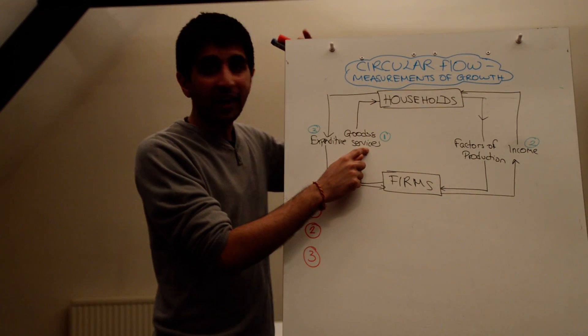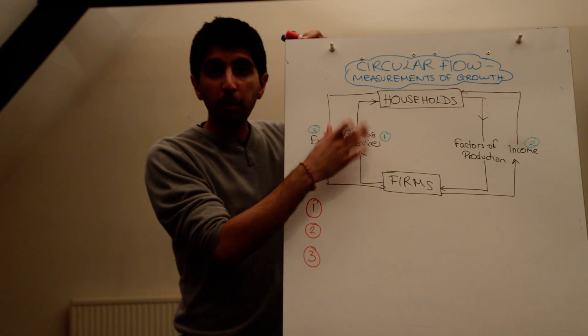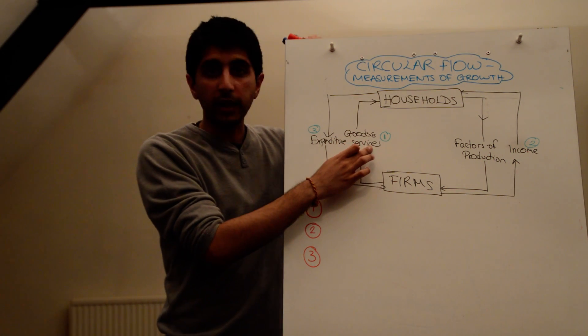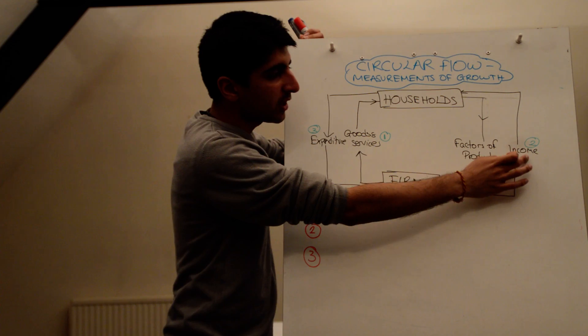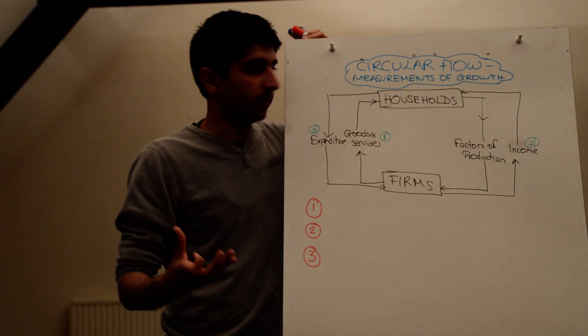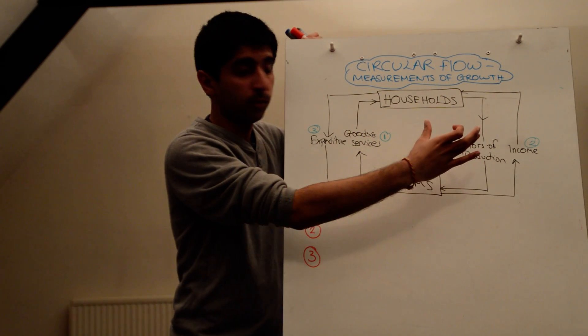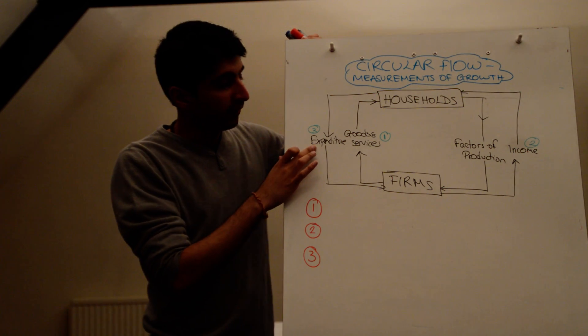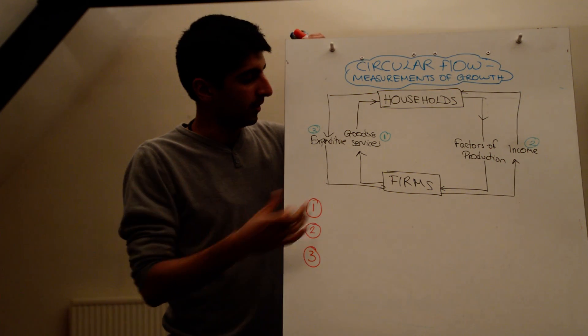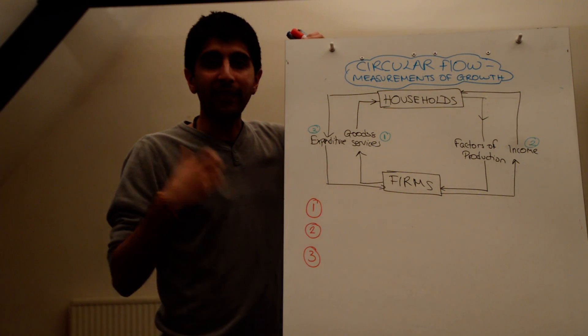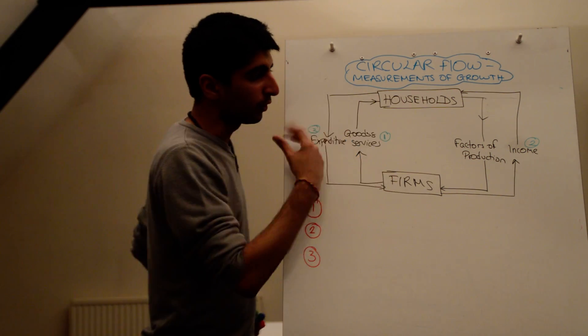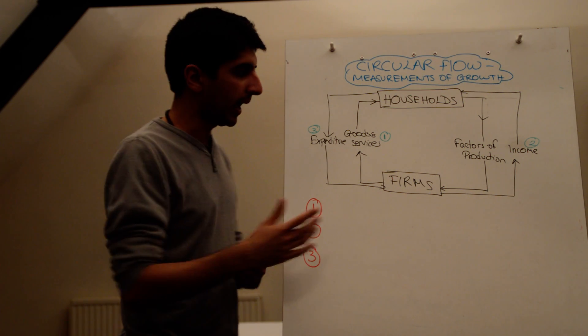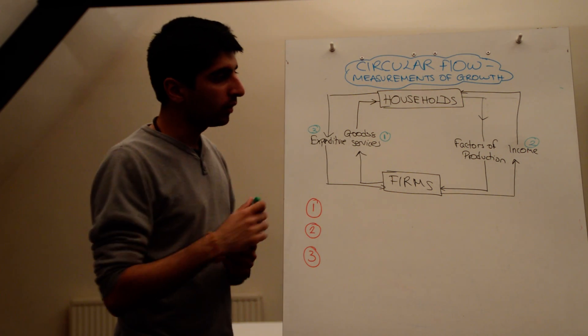There are three ways in which we can do it. We can measure the value of these goods and services. These are all part of the flow. So by measuring the value of goods and services, we get a measure of the flow. We can measure the total level of incomes in the economy. That's part of the flow. And we can also measure the level of spending in the economy, the expenditure in the economy. And that gives us an idea of the flow as well. So there are three different methods.